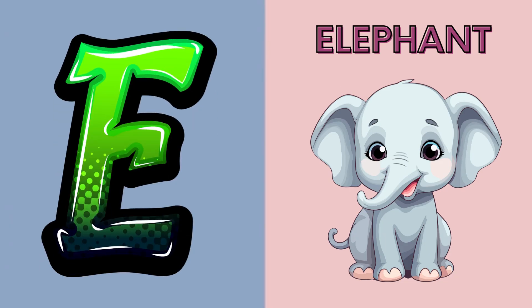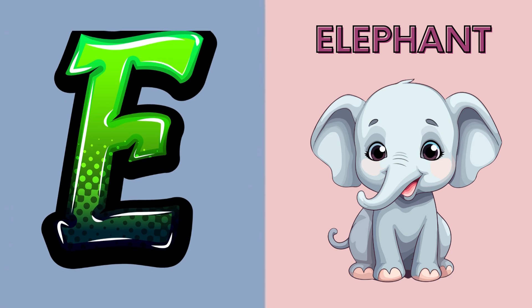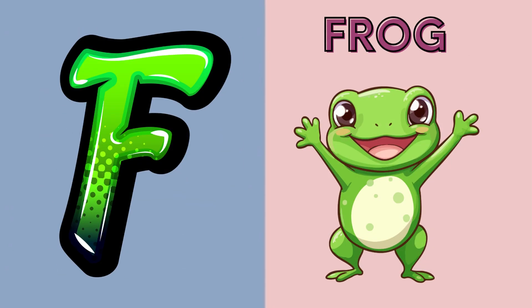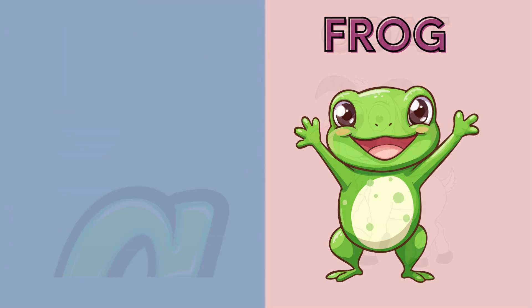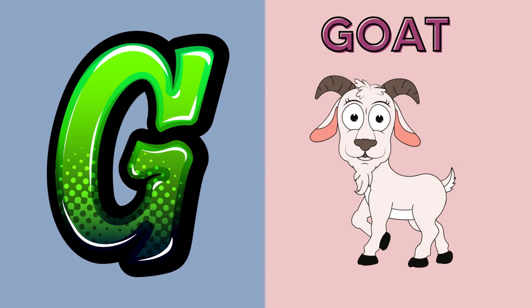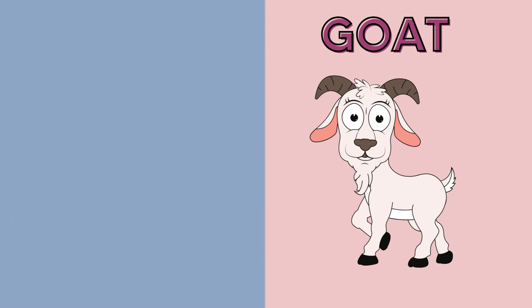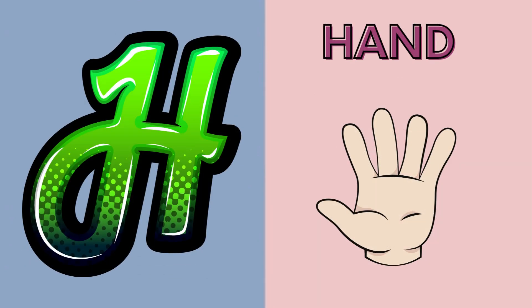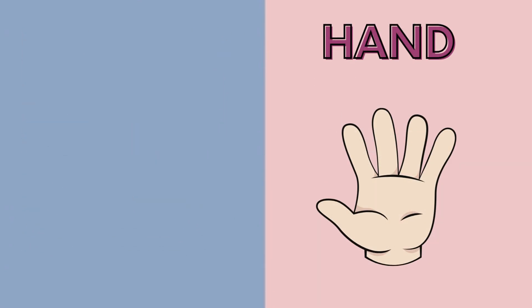E is for elephant, e-e-elephant. F is for frog, b-b-frog. G is for goat, g-g-goat. H is for hand, a-a-hand.